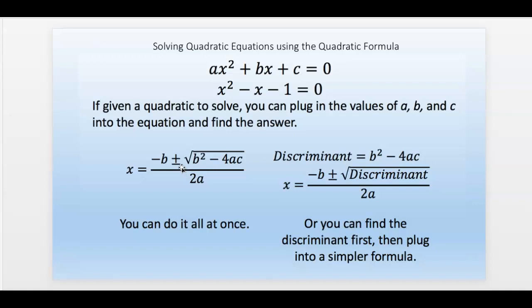But I often show my students to do the discriminant first. Just take the B squared minus 4AC and just calculate it and see what it is.